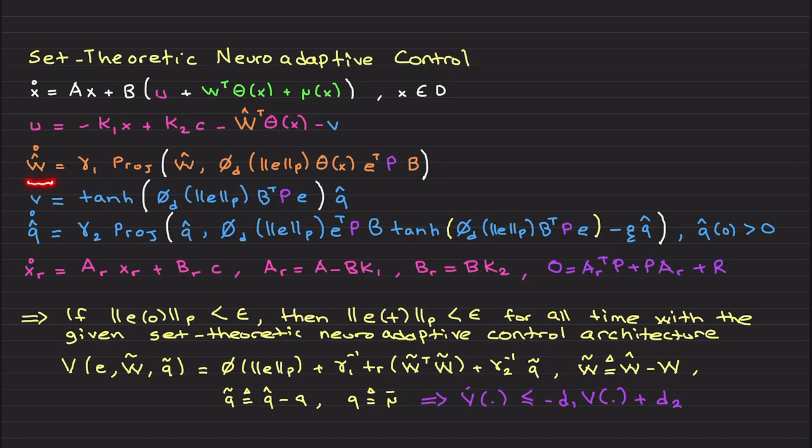We didn't need this before in the neuroadaptive control lectures, but we need it here for the stability proof to conclude. So this is the weight update law. It has this phi derivative, but now with projection operator. This is gamma 1. This is v, looking like this, tangent hyperbolic, multiplied by this. And this is multiplied by q hat. Q hat has projection operator multiplied by this. Now this is a positive term which can grow. To prevent q hat from growing, we also added a leakage term such that it doesn't grow unboundedly. The initial condition for q hat is positive, which is kind of interesting. We never used such initial conditions before, but this is required for the proof.